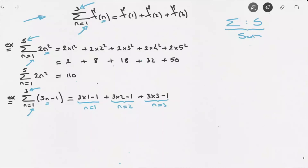Calculating each of these: 3 times 1 minus 1 would be 2, plus 3 times 2 minus 1 would equal 5, plus 3 times 3 is 9 minus 1 would be 8. Adding all of these together, we find that this sum is equal to 15.